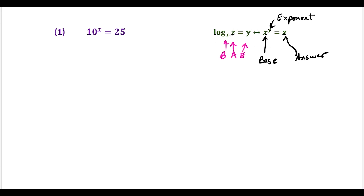We're going to use this formula here to go from exponent form to log form. In terms of logs and exponents, the base of the exponent is this value here, and the exponent is the small superscript number written above. The answer is after the equal sign. When talking about the log, the base is the little subscript, the answer to the exponent goes inside the log, and the exponent goes after the equal sign. A helpful way of remembering this is just say 'bae' — B-A-E — base, answer, exponent. Some people like to draw the loop: x to the y equals z. Whichever helps you more, that's the one you should use.